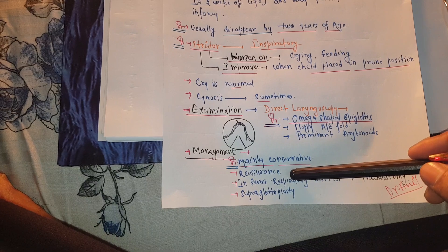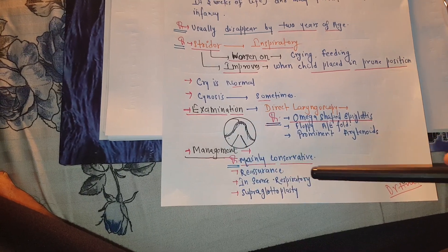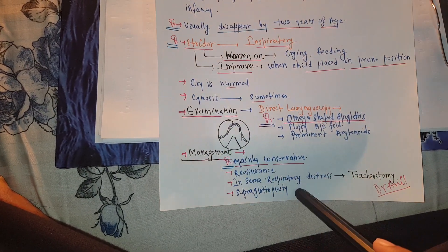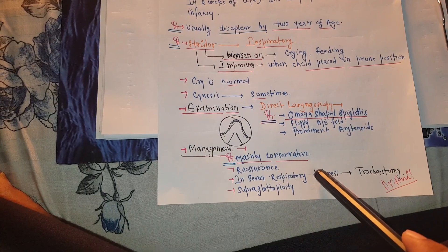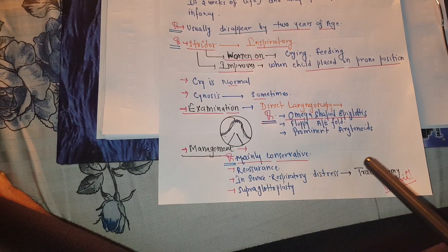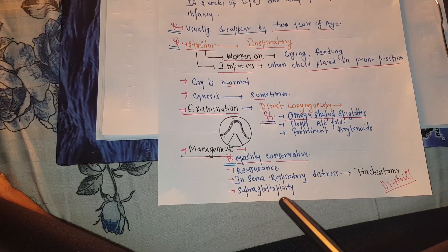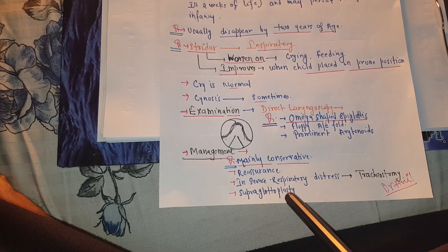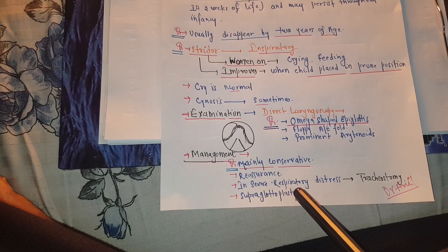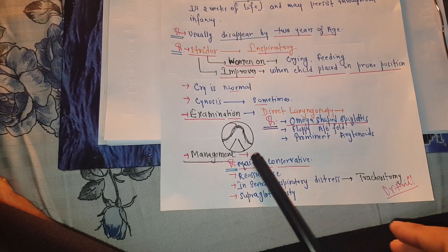When severe respiratory distress is present, we go for tracheostomy, and sometimes we perform supraglottoplasty. This is all about laryngomalacia. Thank you.